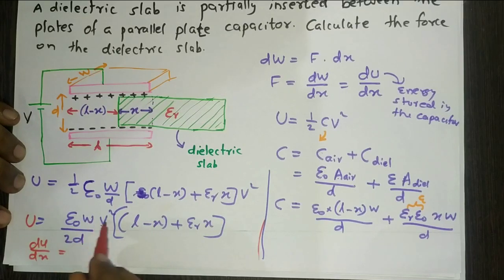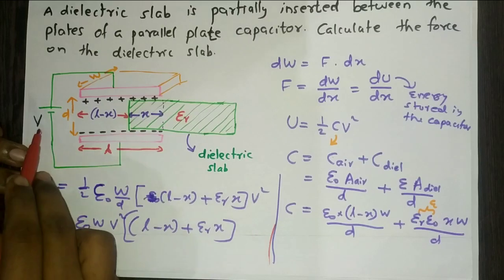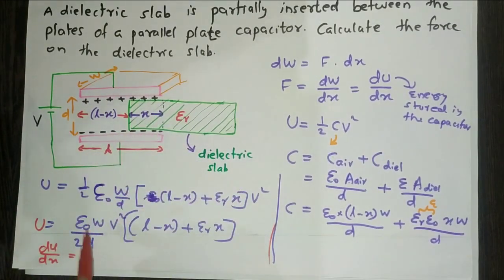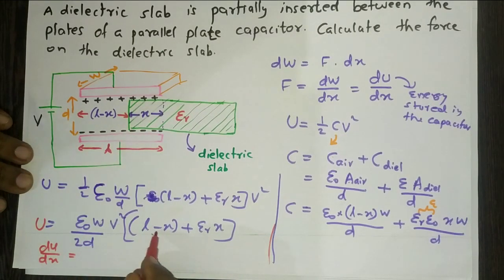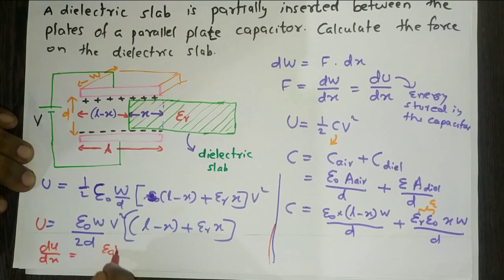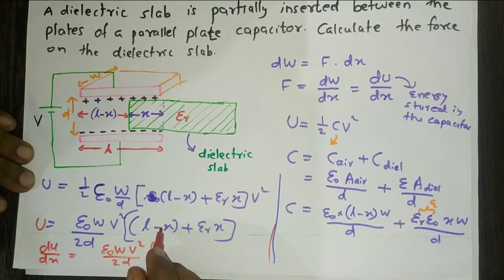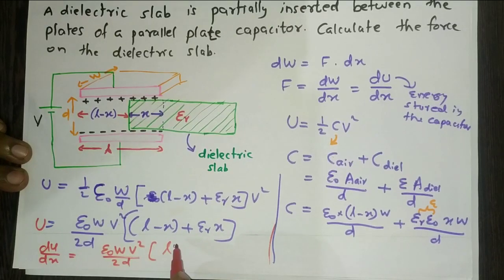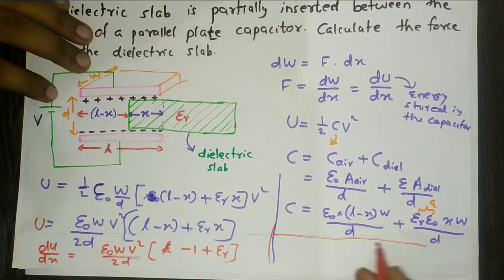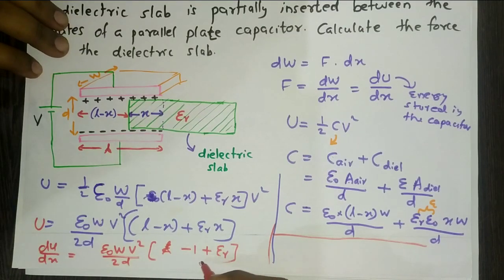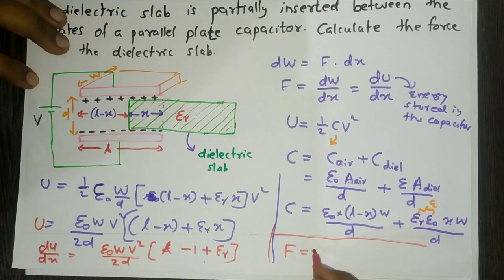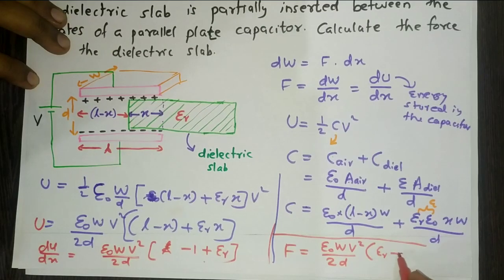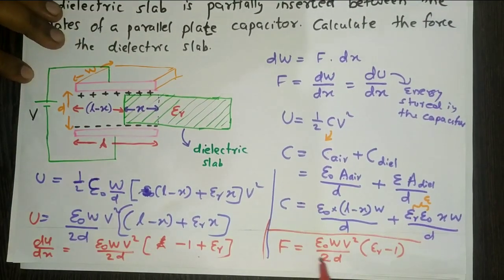Since V, W, d, and ε₀ are all constant, differentiating U with respect to X gives dU/dX = ε₀·W·V²/(2d) × (-1 + εr). Substituting into the force expression, F = ε₀·W·V²/(2d) × (εr - 1).